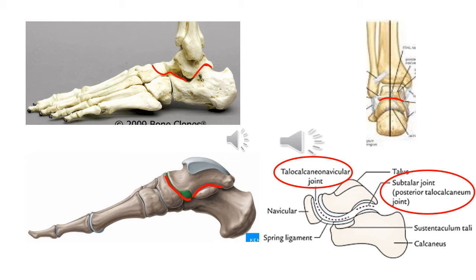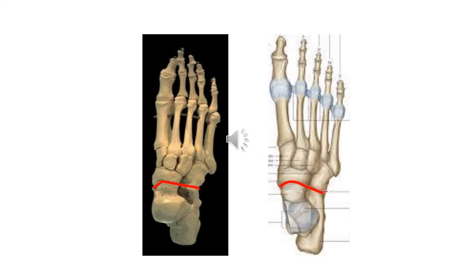This shows the talonavicular joint. In this photograph, red line shows transverse tarsal joint. It is a compound joint consisting of calcaneocuboid and talonavicular joints.